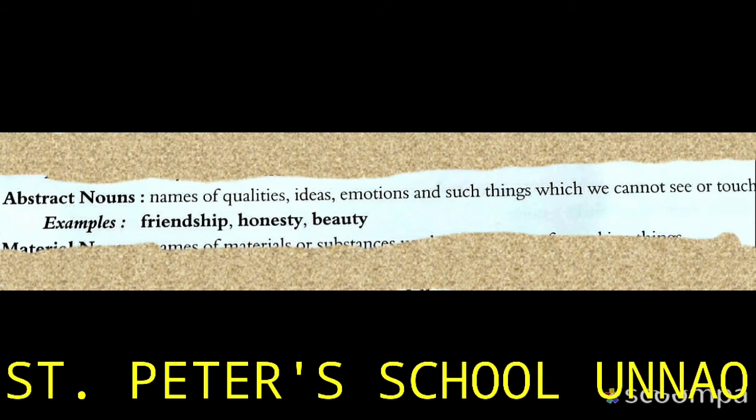For example, grief — can you see pain? No. Can you touch it? No. Happiness — you cannot see or touch it. Your emotions, like when you are missing your mother or child and you cry — you can touch your eyes, but you cannot touch the feeling itself. That emotion is an abstract noun.